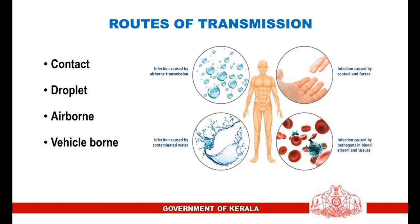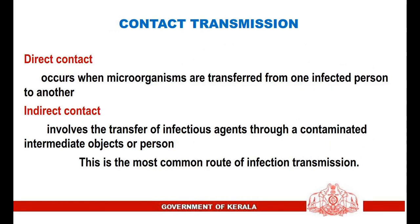Main routes of transmission include contact, droplet, airborne, and vehicle-borne. Contact transmission is broadly classified into two types: direct contact and indirect contact. Direct contact occurs when microorganisms are transferred from one infected person to another. Indirect contact involves the transfer of infectious agents to a contaminated intermediate object or person. These are the most common routes of infection transmission.